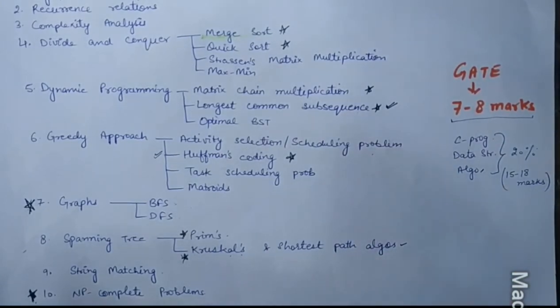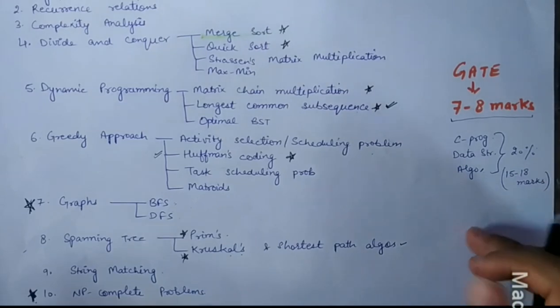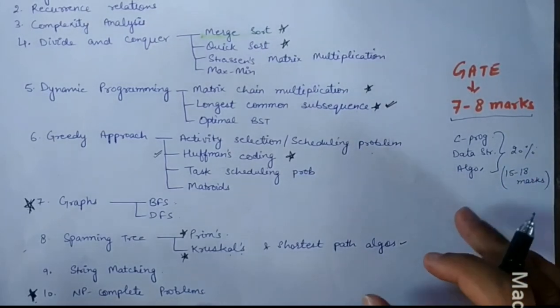Next is Spanning Tree. In Spanning Tree, there are Prim's and Kruskal's. These are numerical-based questions to find out the shortest path algorithms. And other shortest path algorithms will be Floyd-Warshall, Dijkstra's, which we will discuss nicely in the next video lectures.